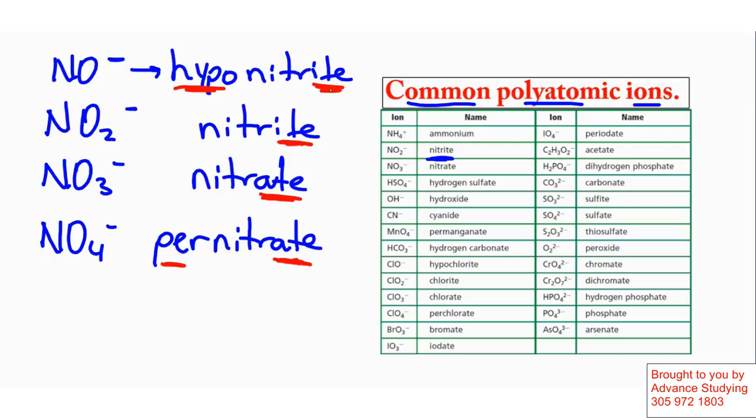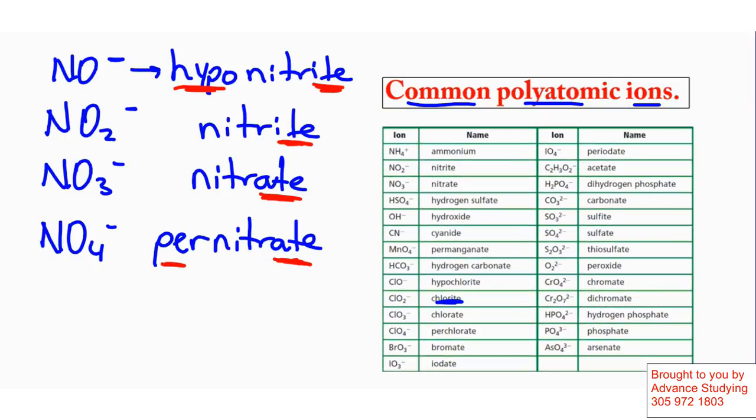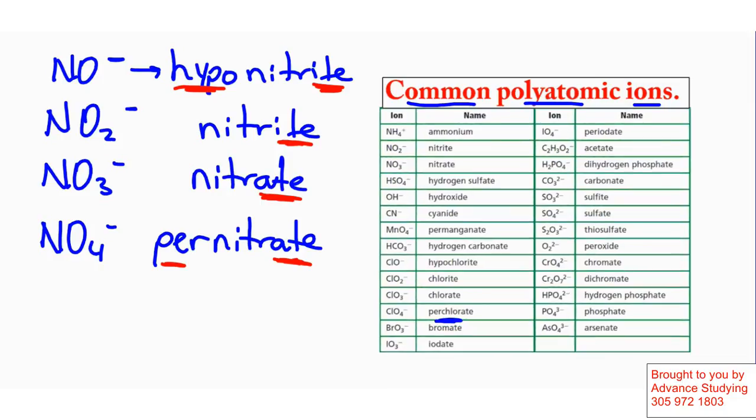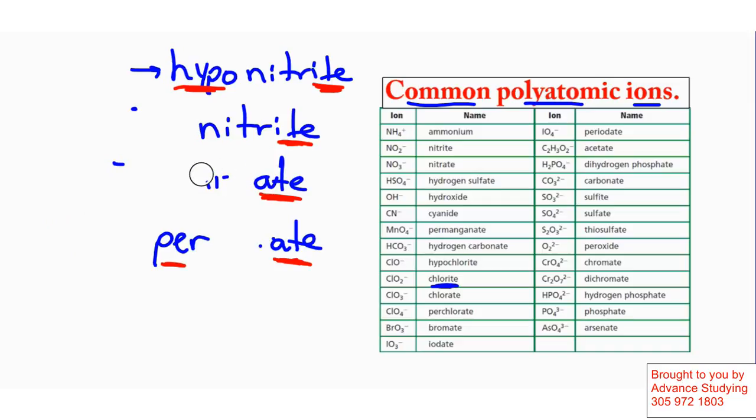The same thing can be applied to other polyatomic ions. For example, I could look at chlorite and chlorate. The only difference there is the amount of oxygens that they have. So chlorite and chlorate, they're different by one oxygen each. Let's see how we could name them. So I'm going to erase this over here, and I'm going to add only the new polyatomic ion name.